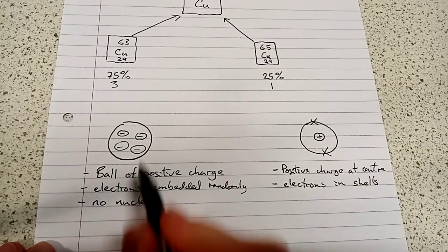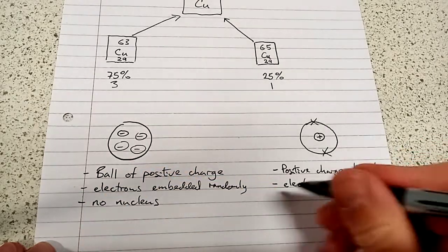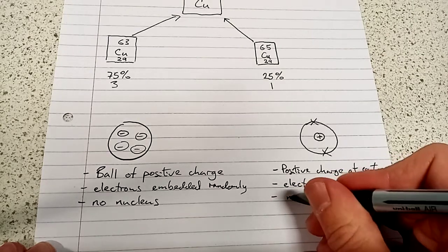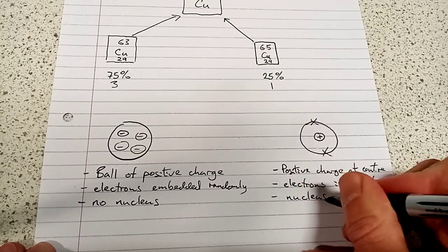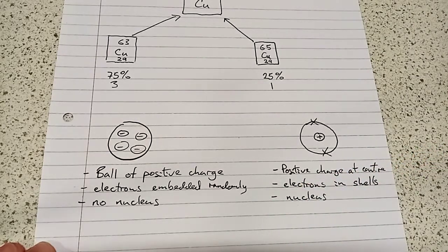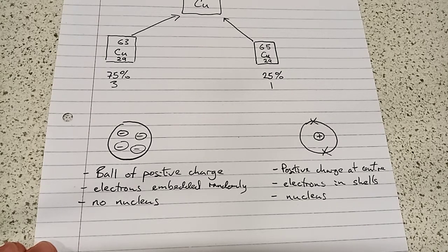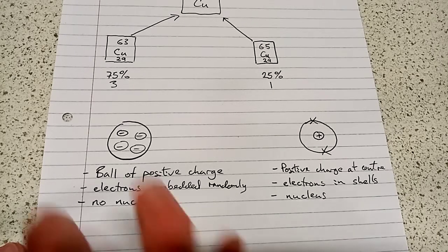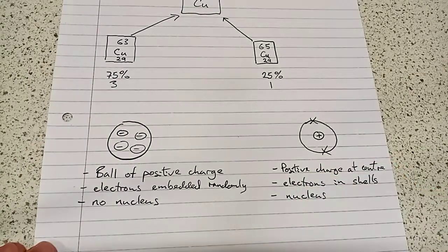So, no nucleus in the plum pudding model, but in the nuclear model, we do have a nucleus. So, it's important that we realize and appreciate that the model of the atom has changed from the plum pudding to the nuclear model.